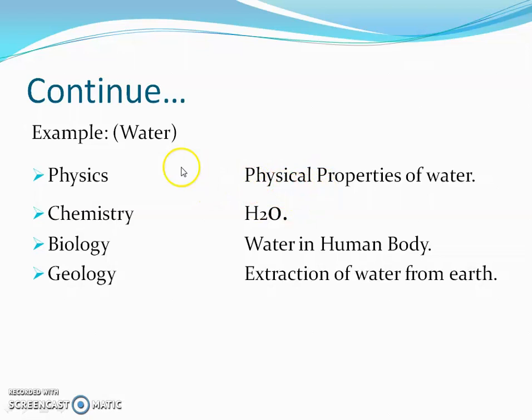Here you can see that a single entity, a single example can be placed in any of the branch, but the difference is you have to clear your vision - from which perspective you are looking the object. If you are looking water from physical properties or physical aspect, then it would be studied in physics. If you are studying about its chemical bonds, it would be studying chemistry and so on.